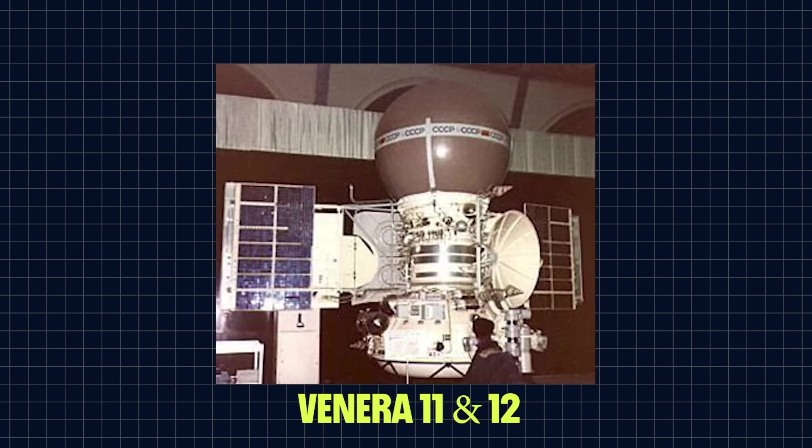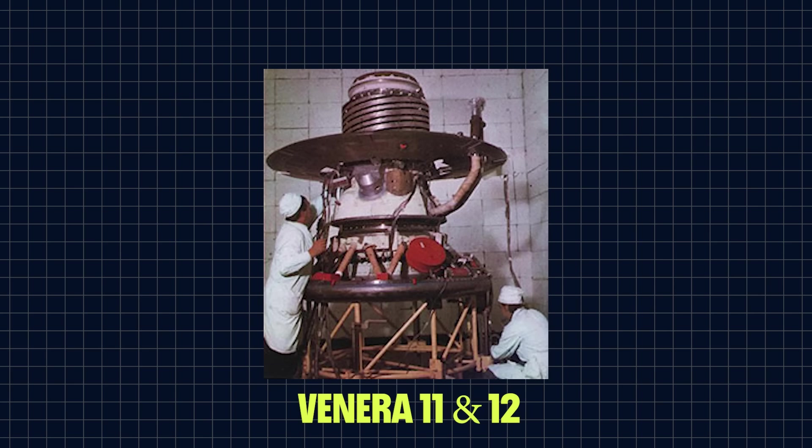Venera 11 and 12 were less eventful missions. They failed to return any interesting photographs due to lens cap failures. This was one of the tricks with Venus. You have to protect the camera on the way down, or it will melt prematurely, but then you have to rely on an automated system to reveal the lens. And it didn't always work.